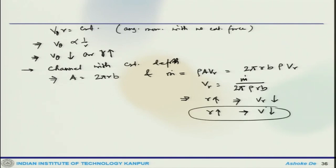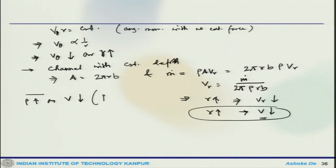Even in the vaneless space, some diffusion process takes place, which means the flow velocity also decreases. However, the density increases as v decreases because pressure increases. Hence v_r is proportional to 1/r, but this variation also depends on density variation. One has to calculate this using the continuity equation.